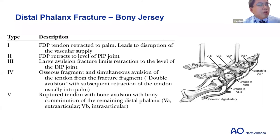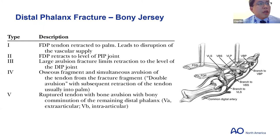Luckily, if jersey fingers are caught acutely, the vincular system on the flexor side means the tendon typically doesn't retract too far. You can often assess the level of retraction with a good physical exam; if there's any question, consider ultrasound. Chronic cases that come in late can retract all the way to the palm — those are usually more difficult to fix because the tendon has already contracted and is short.